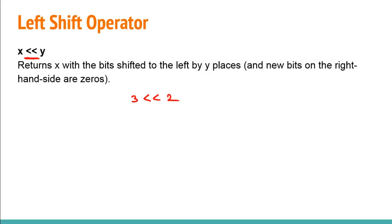For example, take 3 << 2. You first convert 3 to binary, which is 11. Now you left shift by two, so the bits move left by two places and two zeros are added at the end. This gives you 1100, which is equivalent to 12 in decimal.